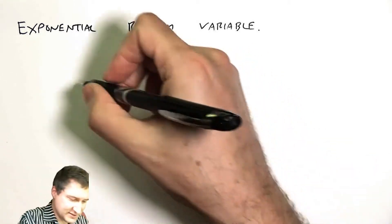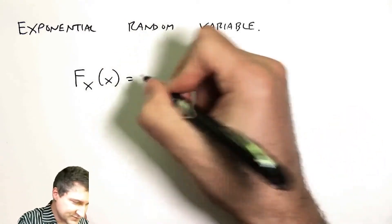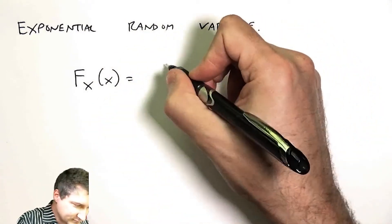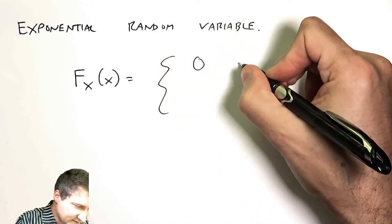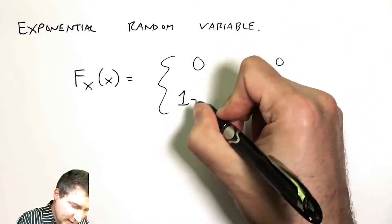Now to define a new random variable I need to tell you what is its CDF, cumulative distribution function. For the exponential random variable it's defined as zero when x is less than zero and one minus e to the minus lambda x when x is some positive number.